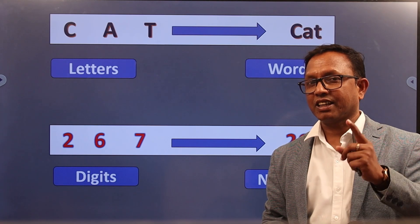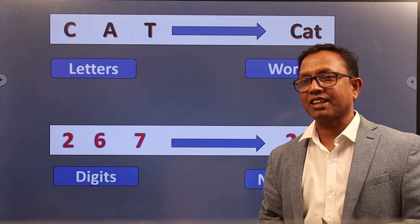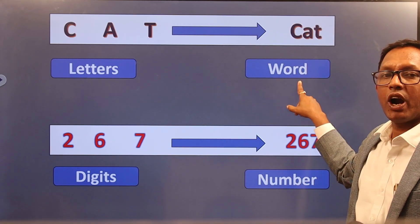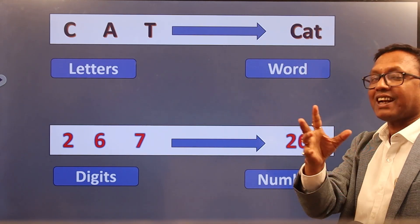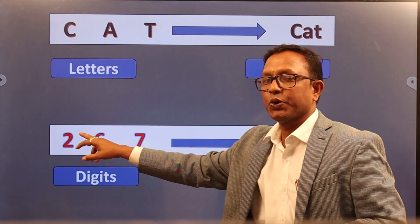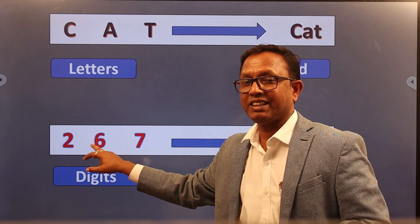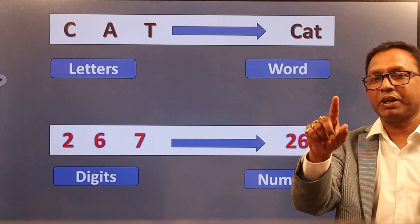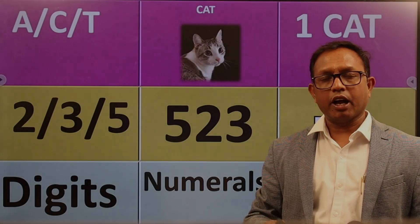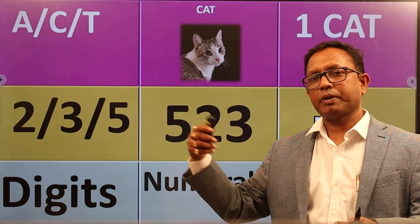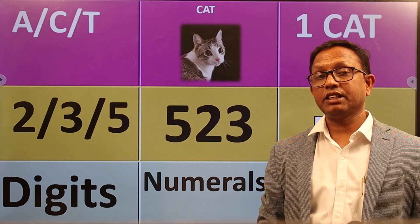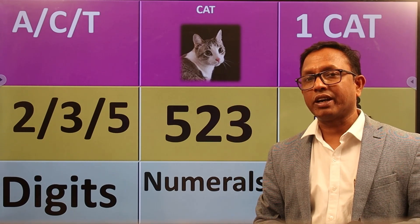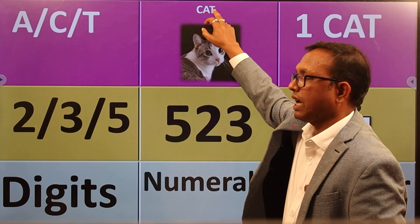C is a letter, A is a letter, T is a letter. A letter is exactly what forms a word. Right? Exactly in mathematics, 2, 6, 7 — what digit is? 267 is a number, and we can explain it easily. A, C, T are letters — what is the word? The letters form the word.